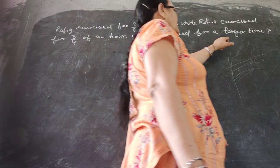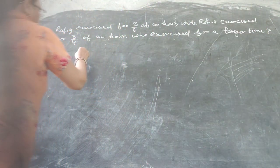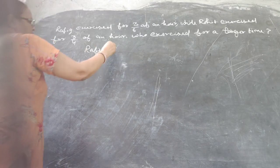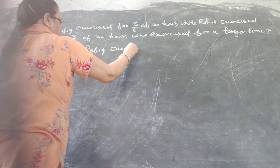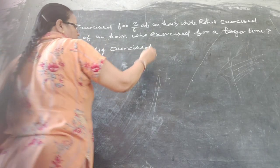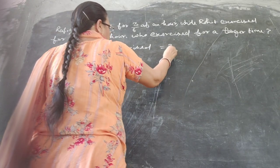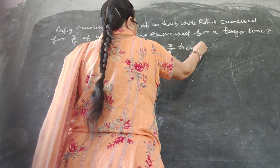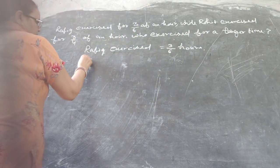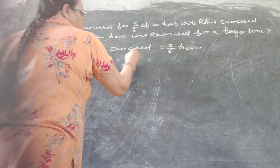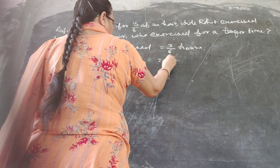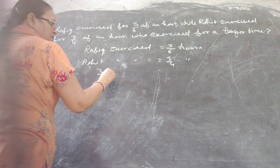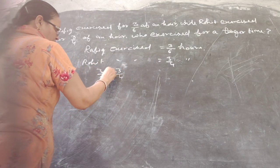Who exercised for a longer time? Rafi exercised for 3 by 6 of an hour. Rohi exercised for 3 by 4 of an hour. 3 by 6, 3 by 4. Now I ask.